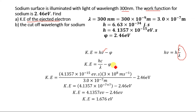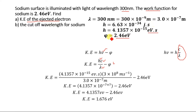By replacing the frequency term with c divided by lambda, we get the kinetic energy equal to hc divided by lambda minus the work function. To find kinetic energy, we substitute values for Planck's constant, speed of light, wavelength, and work function. Since the work function is given in electron volts, we use Planck's constant in electron volt seconds. If we used Planck's constant in joule seconds, we would need to convert the work function to joules and would get kinetic energy in joules. Since we need the answer in electron volts, we use the electron volt form.